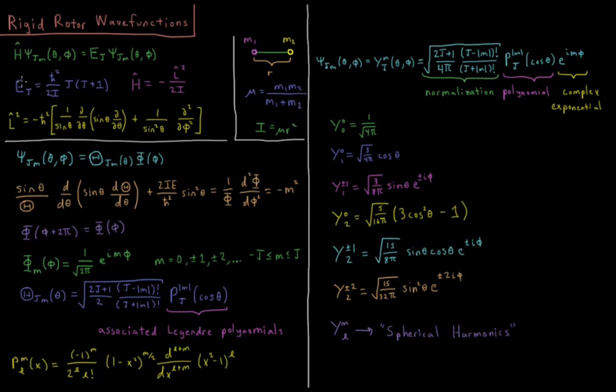The energy we've come across before: E sub j equals h bar squared over 2I times j times j plus 1. And the Hamiltonian operator is just the kinetic energy, which equals the negative angular momentum squared operator divided by 2 times the moment of inertia. And our potential energy is zero, as long as our center of mass isn't moving and our bond length is rigid.